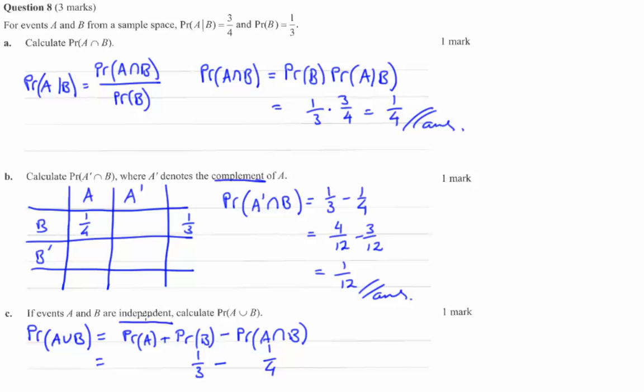So remember, if events are independent, the independent events, their intersection is the product of each individual probability. Right? So that says that a quarter equals a third times the probability of A. And then if you take a quarter and divide it by a third, you figure that out, you get three quarters.